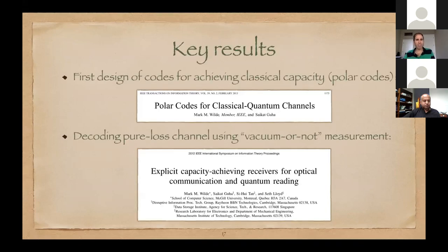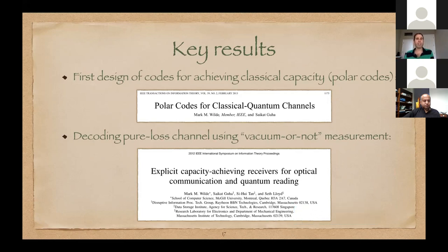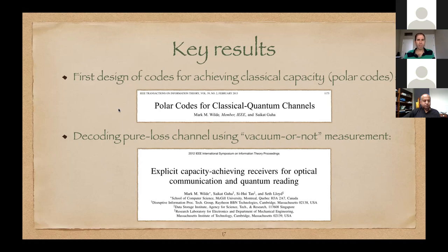I'm going to show you some work I've done on classical communication. You might be interested in designing error correction codes for communicating classical information over a quantum channel. A number of years ago, Saikat Guha and I wrote a paper about polar codes for sending classical information over quantum channels. These codes are explicit codes that achieve capacity. We built on work of Arıkan, who did work on polar codes for classical information theory — the first to show an explicit scheme for achieving capacity of a classical channel. He later won the Shannon Award, and we generalized his work to the quantum case.